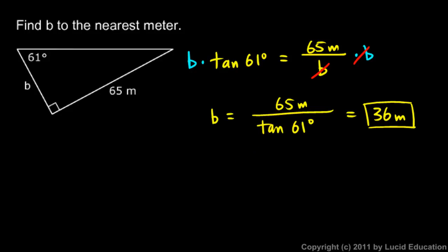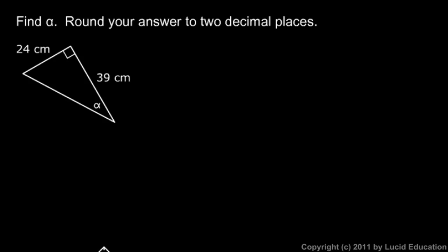Here we're told to find alpha — that's the Greek letter alpha. We commonly use Greek letters to indicate angle measures. We're given this side of 24 centimeters and this side of 39 centimeters.